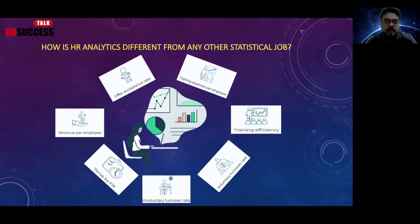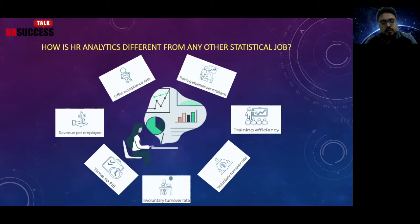Training expenses per employee is obtained by dividing the total training expenses by the total number of employees receiving the training. The value of this expense can be determined by measuring training efficiency. Poor efficiency may lead you to re-evaluate the training expense per employee.